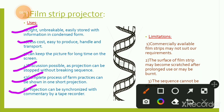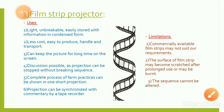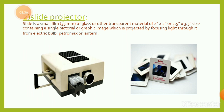Projection can be synchronized with commentary by a tape recorder. Limitations: commercially available film strips may not suit all requirements. The surface of the film strip may become scratched after prolonged use or may get burned. So after heavy use, the surface can be damaged or destroyed — this is a limitation, and it is not ideal for commercial use.